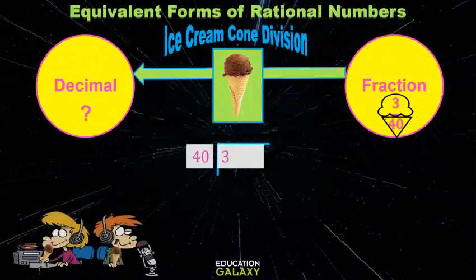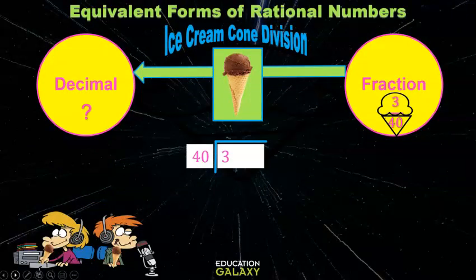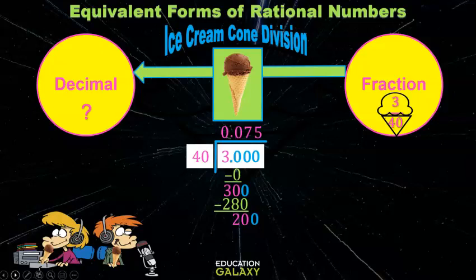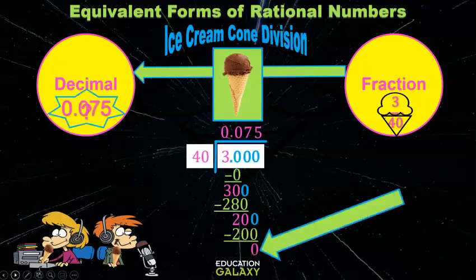Oh, I get it. Now simply put a decimal point in zeros and do the division. Keep going until you get a zero remainder. So three fortieths is zero point zero seven five, or seventy-five thousandths.